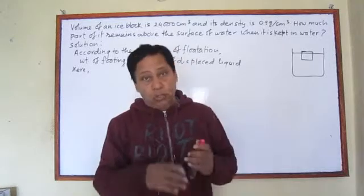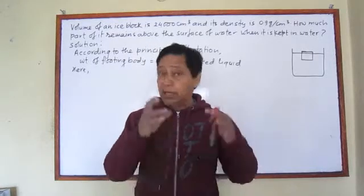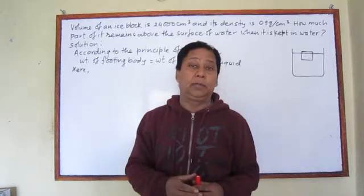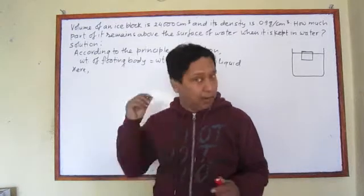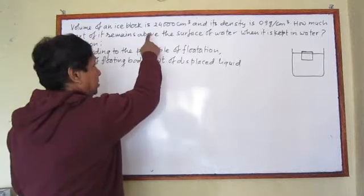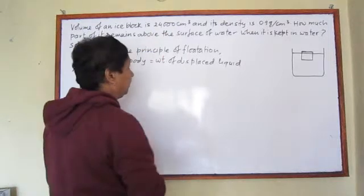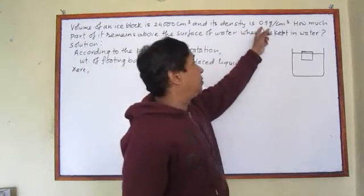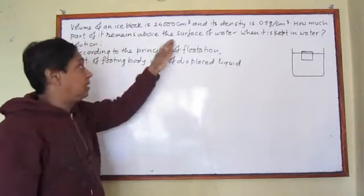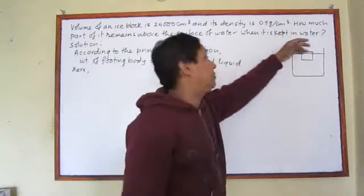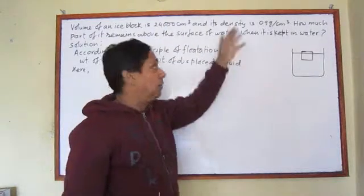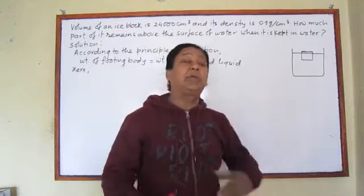I am going to solve a numerical problem related with pressure. I have taken this numerical problem from the SLC board of Nepal. Look at the problem: the volume of an iceberg is 24,000 cubic centimeters and its density is 0.9 grams per cubic centimeter. How much part of it remains above the surface of water when it is kept in water?